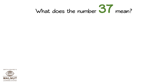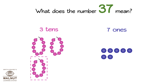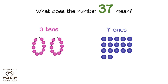What does the number 37 mean? It means there are three tens and seven ones. Let's show this as beads. Now if we break apart one ten,